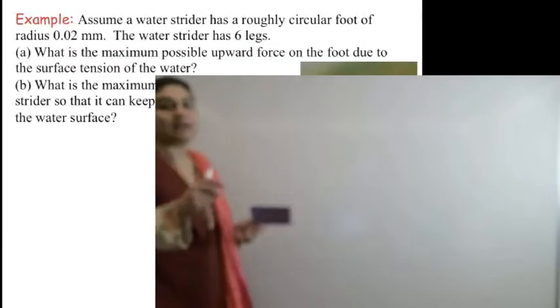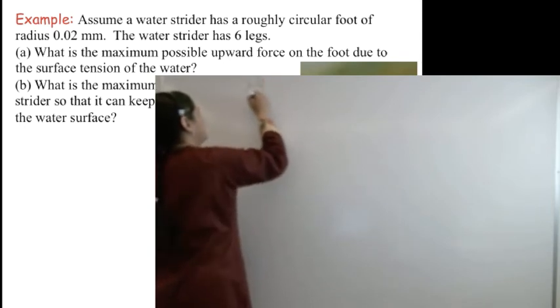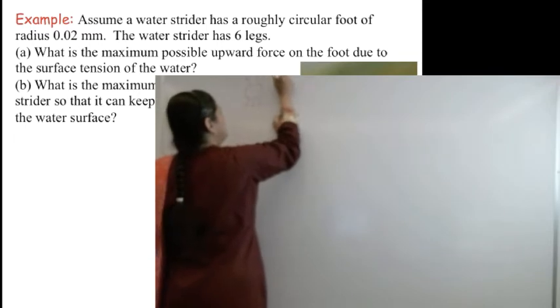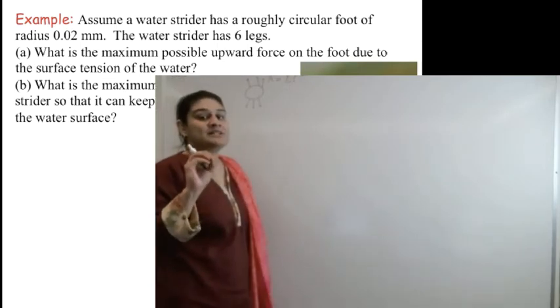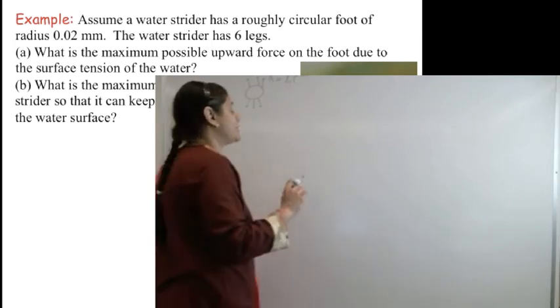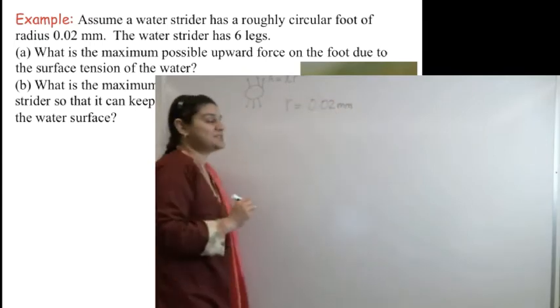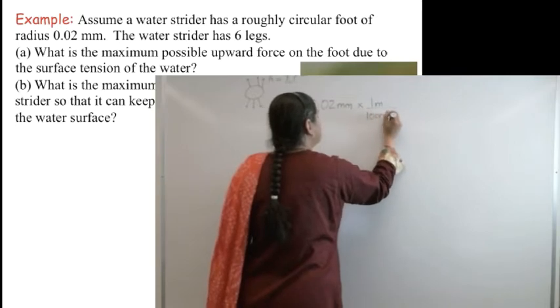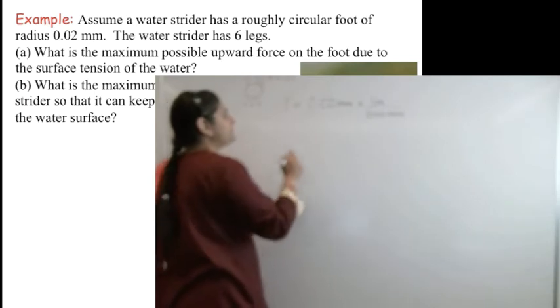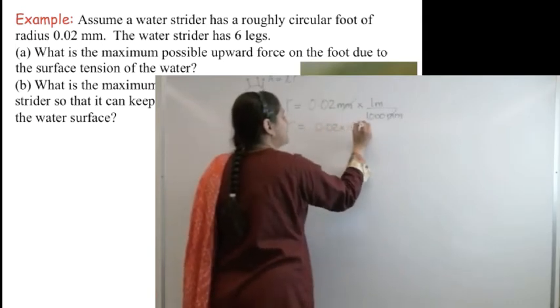In this case, it gives us a water strider that has a roughly circular foot of radius 0.02 millimeters. We have a water strider, it has six legs, and each of its legs has a circular area, and that area is going to be given by πr². The question is asking me, what is the maximum possible upward force on the foot due to the surface tension of the water? First things first, it gives me a radius r, which is 0.02 millimeters. As soon as I see millimeters, I know I have to convert it into meters, so this means it's going to be 1 meter divided by 1000 millimeters. Millimeters will go away, and I will get my radius in terms of 0.02 times 10⁻³ meters.